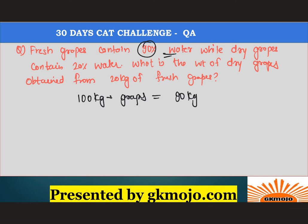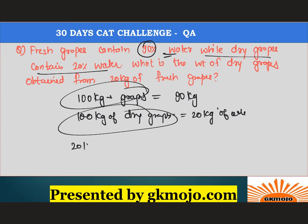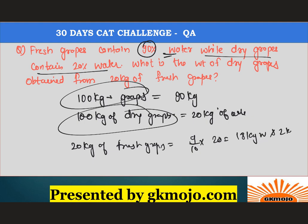So 90 kg is water in 100 kg of fresh grapes. For dry grapes, they contain 20 percent water, meaning 80 percent is non-water material. Coming to the actual question: from 20 kg of fresh grapes, the water content is (9/10) multiplied by 20, which is 18 kg of water, and 2 kg is non-water material.